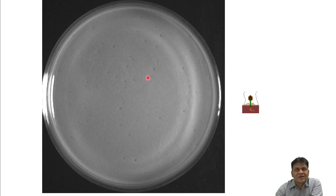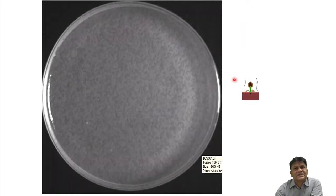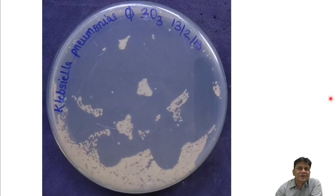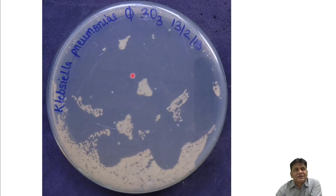When viruses are isolated and purified, counting is done using a soft agar overlay method. Small holes formed by viruses lysing surrounding bacteria are called plaques. As the number increases you see more plaques, then clearing, and at higher numbers complete clearing of the plate occurs. Bacteriophages are found in our bodies — in urine, feces, saliva, and blood circulation — but at very low numbers. When needed, we can increase their number and use them for therapy, food safety, or water purification.